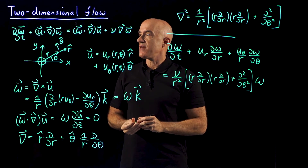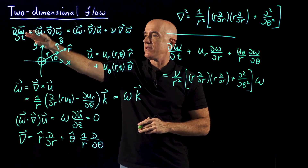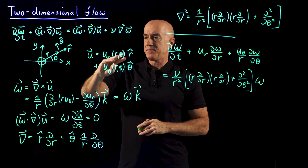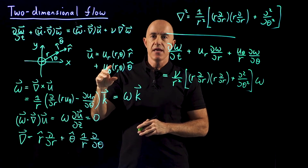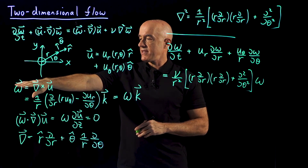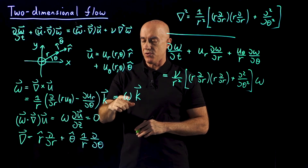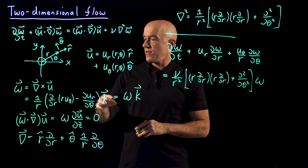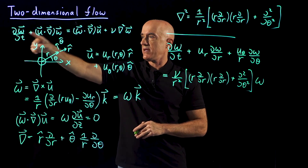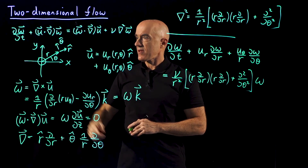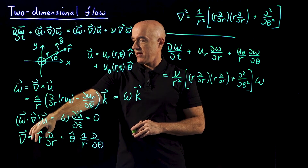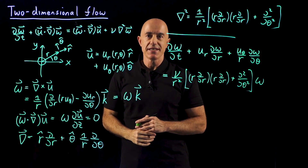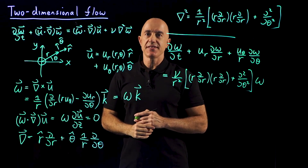In summary, we wrote the vorticity equation in polar coordinates for a velocity field that doesn't depend on z and has no vector component in the z direction. The vorticity field reduces to a scalar vorticity omega only in the perpendicular z direction, so we only need the z component of the equation, making use of the gradient and Laplacian in polar coordinates. I'm Jeff Chasnov — thanks for watching and I'll see you in the next video.